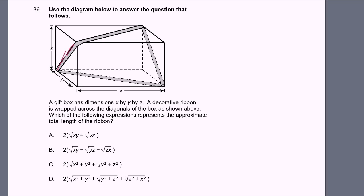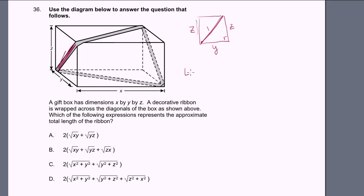What's this length right here? If we draw that side of the box, the height is z and the depth is y. The ribbon goes from the bottom left to the top right. We can use the Pythagorean theorem here, because if this height is z, then this is a right triangle, and we can figure out the hypotenuse. The length squared is equal to y squared plus z squared, or the length is equal to the square root of y squared plus z squared. That's this length right here.